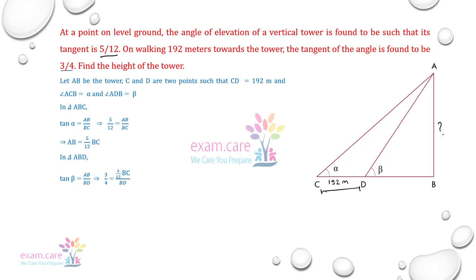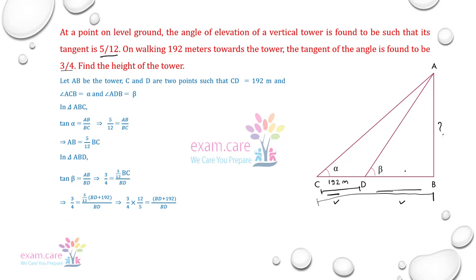अब एक चीज़ notice करते हैं — BC जो complete length है, इसको हम लोग CD plus BD लिख सकते हैं। और CD मेरा 192 meter है, तो BC = 192 plus BD। तो equation बनती है: 3 by 4 is equal to 5 by 12 into (BD plus 192) by BD।